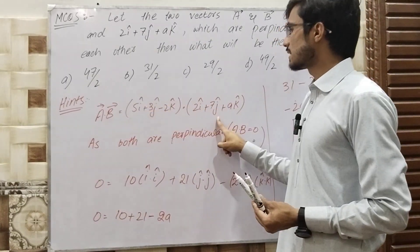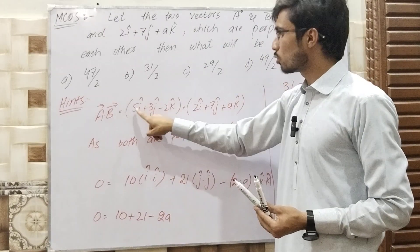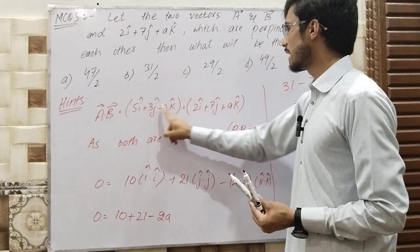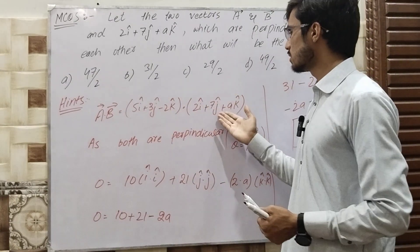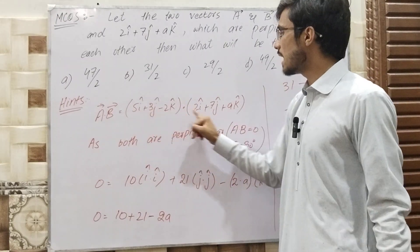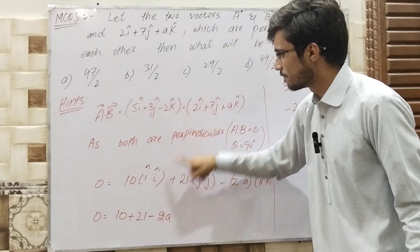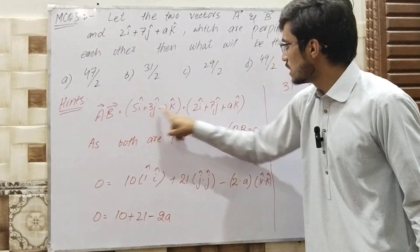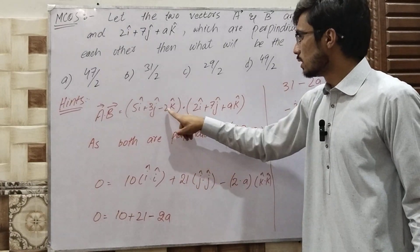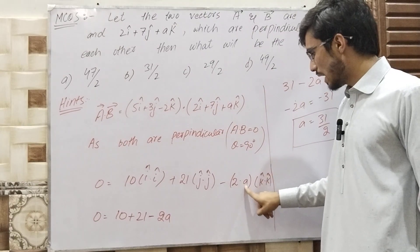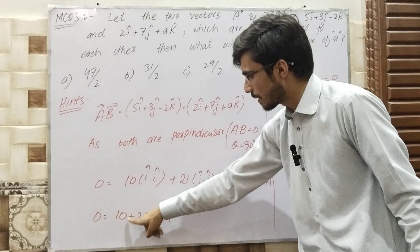For dot products: i·i = 1, j·j = 1, k·k = 1. We calculate: 5×2 = 10 (i·i), 3×7 = 21 (j·j), and -2×a (k·k). This gives us 10 + 21 - 2a.